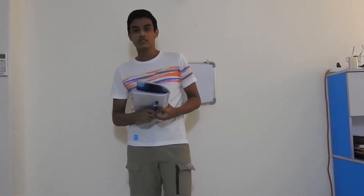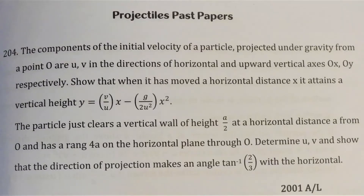Good evening everyone. Welcome to my subscriber. I am Sihal Munidasa and I will be doing a 2001 A/L projectiles question. The question will appear on your screen now. The components of the initial velocity of a particle projected under gravity from a point O are u, v in the directions of horizontal and upward vertical axis OX, OY respectively.